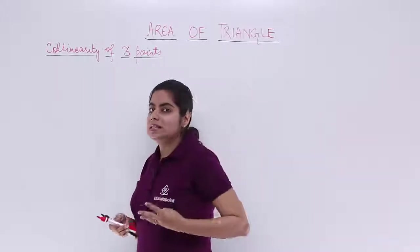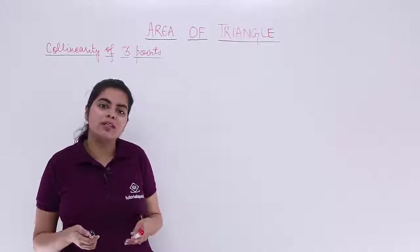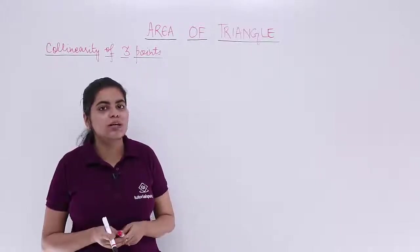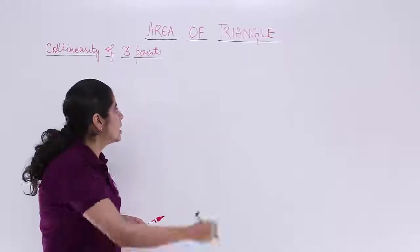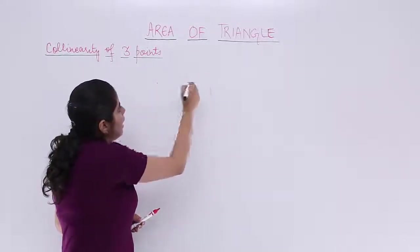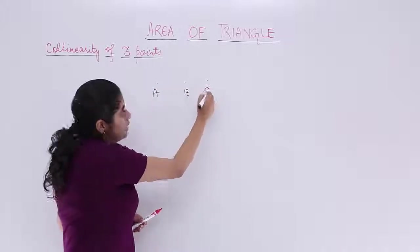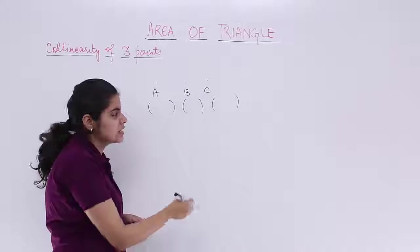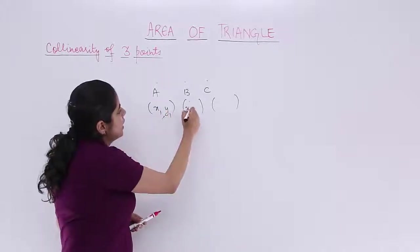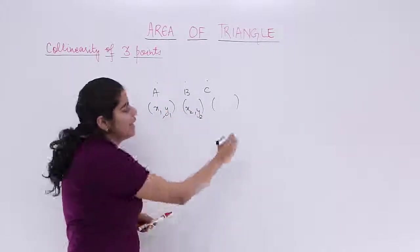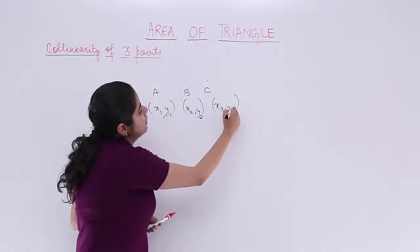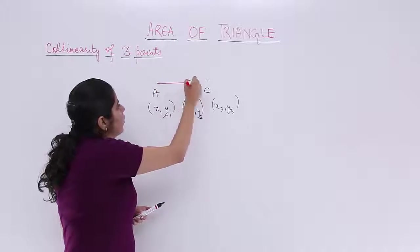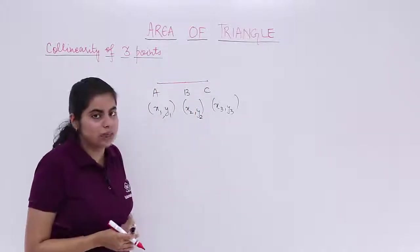Now we know that if three points are given to us and those points lie on the same line, then we say that those points are collinear. That means if I have three points A, B, C and they can be written in the form of coordinates — say (x1, y1), (x2, y2), and (x3, y3) for C — and I know that these points lie on the same straight line, then I say that these points are collinear.